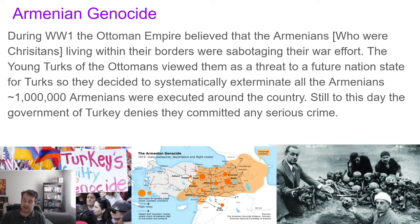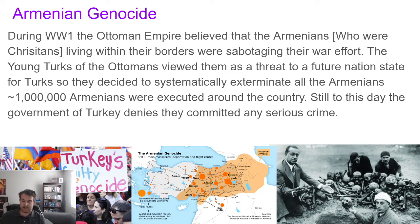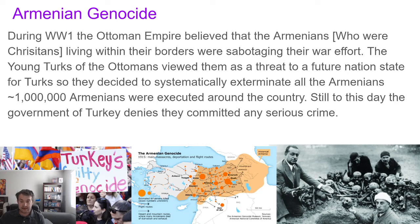The Ottomans kept this under wraps as much as they could. Many people around the world didn't know it was happening, and it was only revealed after the war when people asked where all the Armenians had gone — and there were bones of Armenian people all over the place. Still to this day, the country of Turkey denies there was a genocide. Turkey says they arrested some Armenians and kicked them out, but claims they did not attempt to kill them all.